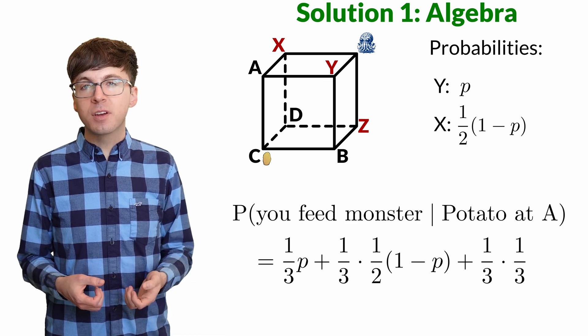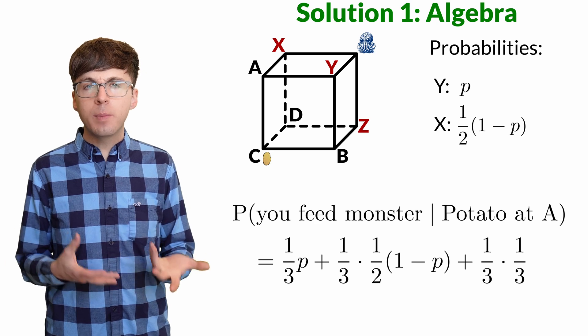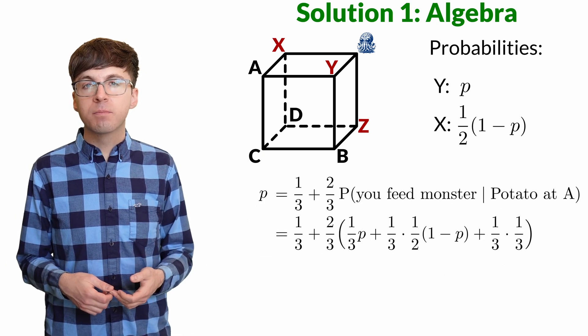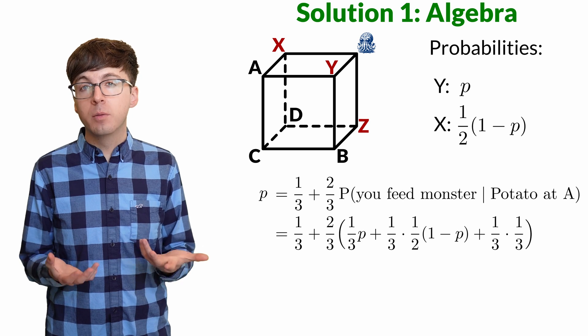Now we have an equation for the conditional probability that we wanted, and we can plug this back into the original equation. We have a linear equation of just one variable, p.